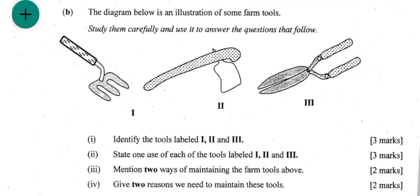The diagram below is an illustration of some farm tools. Study them carefully and use it to answer the questions that follow. Identify the tools. The first one is a hand fork.